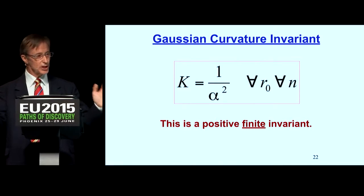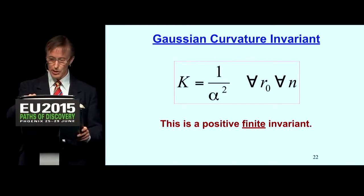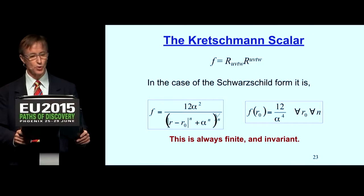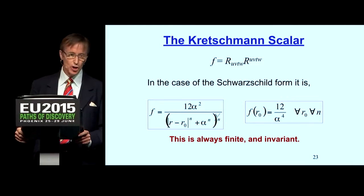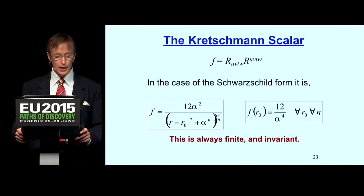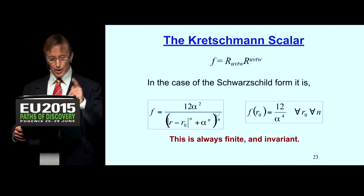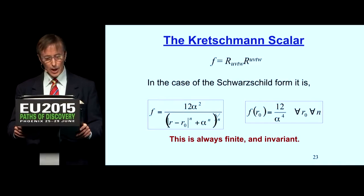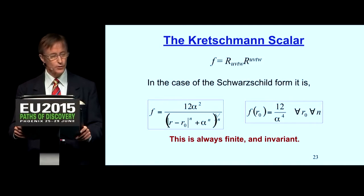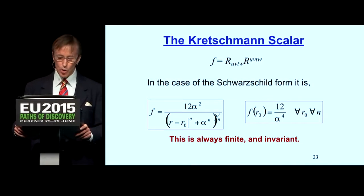That means you can never get black holes anywhere, and it is from Hilbert's solution that the black hole was spawned. The Kretschmann scalar — the Riemann scalar curvature invariant — for Schwarzschild spacetimes is given by 12 over alpha to the fourth for all r-naught and all n. Can the denominator of this ever go to zero? No. So their claim that curvature goes to infinity at the center of a black hole is false.